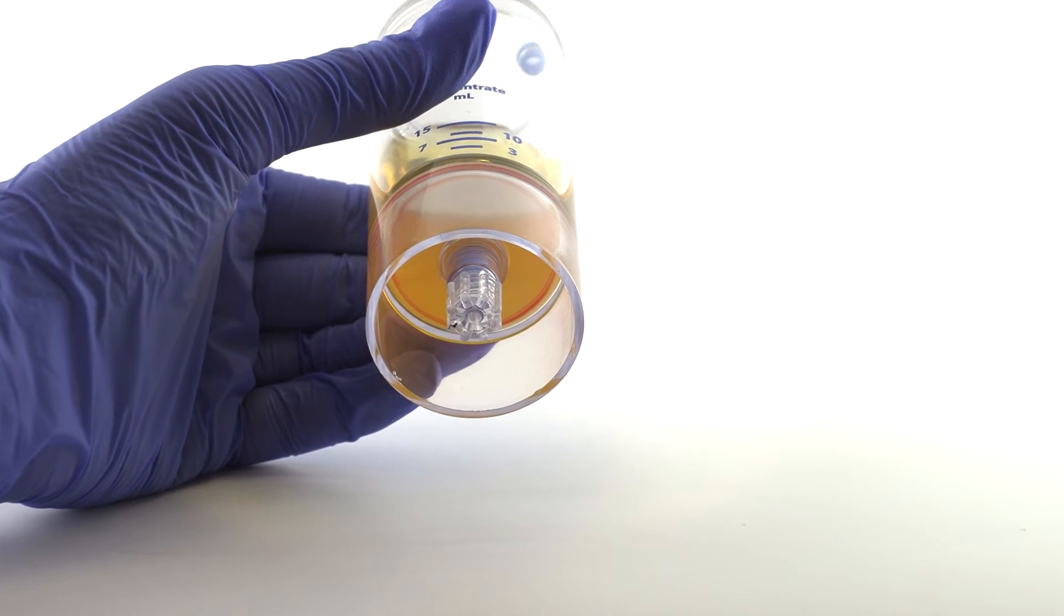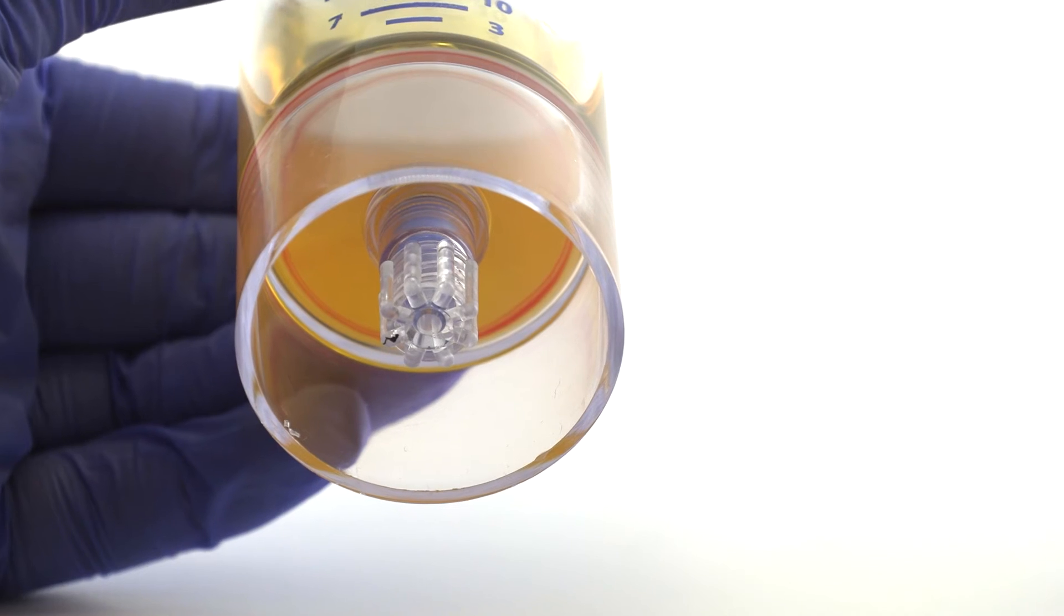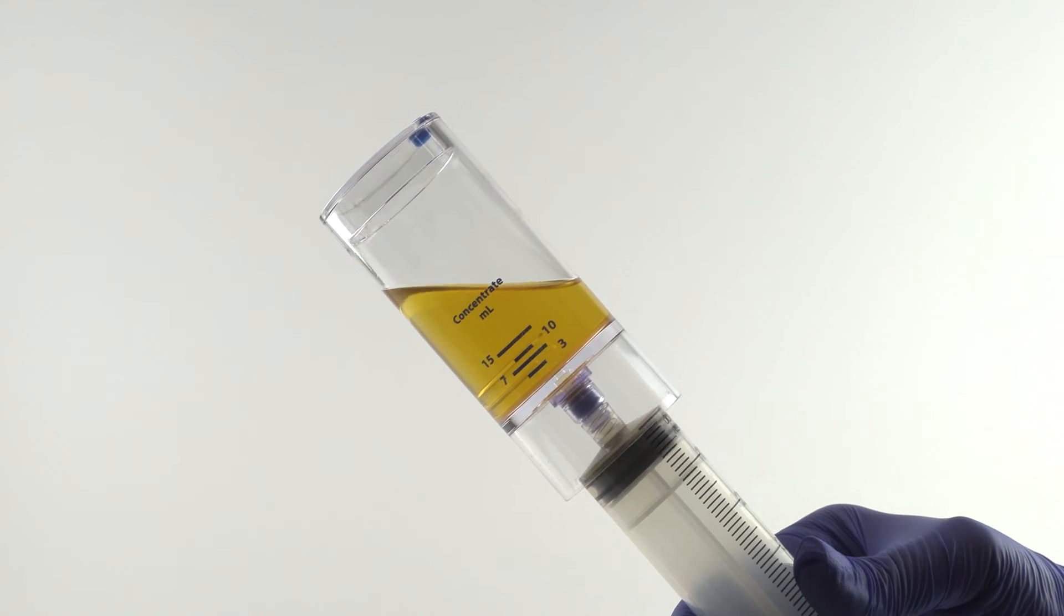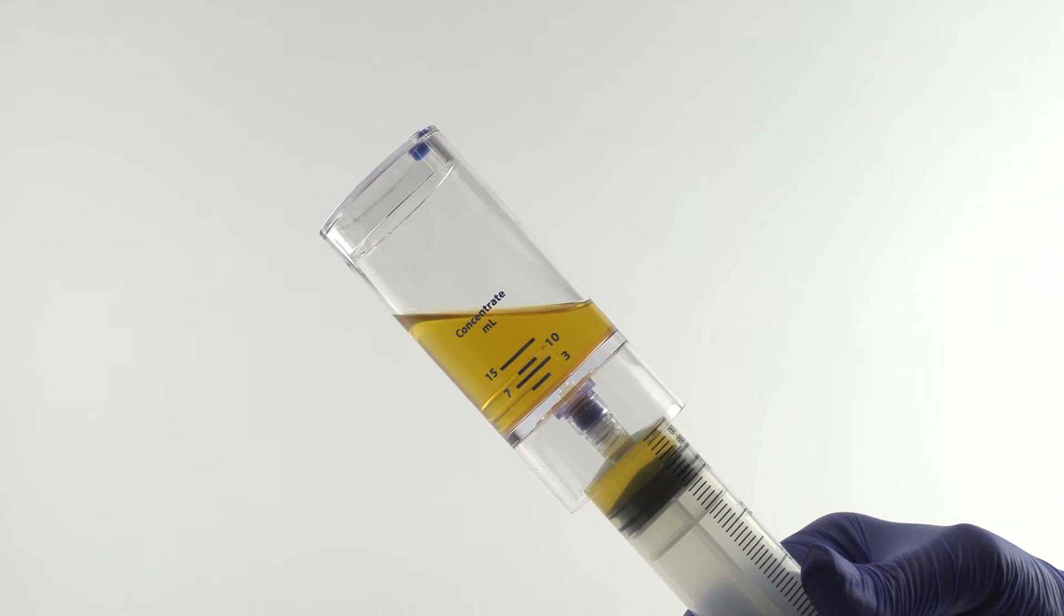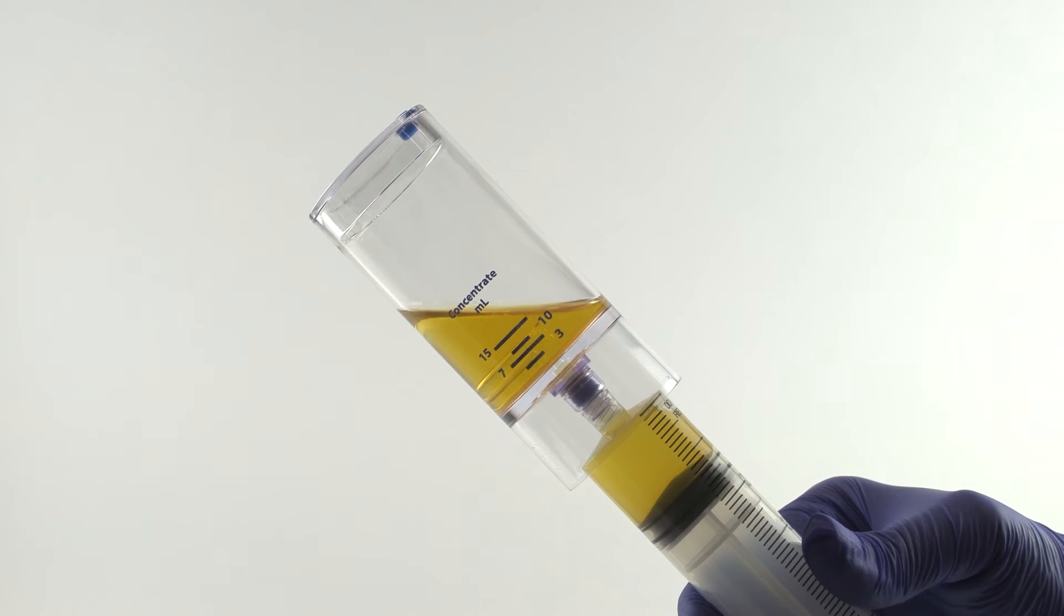After centrifugation, the platelet Buffy Coat layer will be clearly visible at the bottom of the device. Attach a sterile syringe to the needleless port and aspirate all of the plasma as shown, leaving the intact Buffy Coat on the bottom shelf.